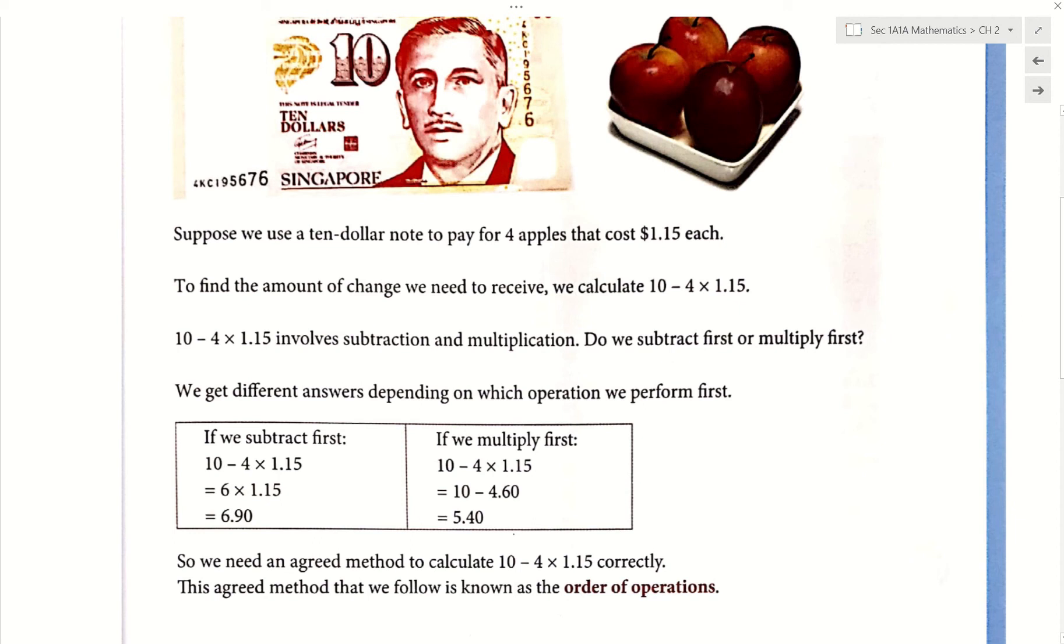Now, the next half of the class, I want you all to do 4 times 1.15 first. Then you take 10 minus that result. 6.90.